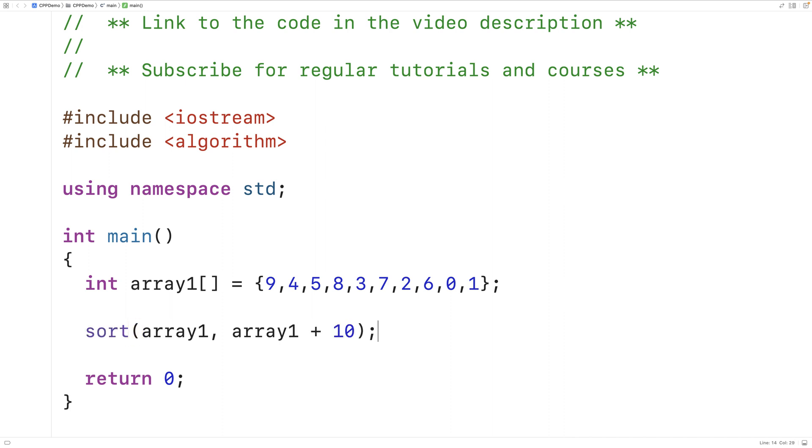So the first argument to the sort function is array1 itself. And when we use an array like this as a function argument, we say that it decays to a pointer. So what's actually given to the sort function as a first argument is a pointer to this first element here. In other words, the memory address of this first element here.